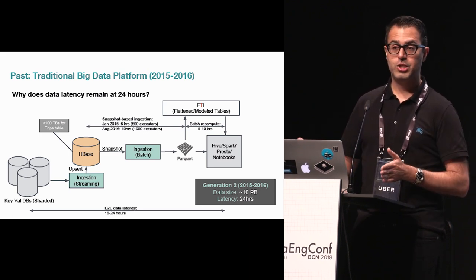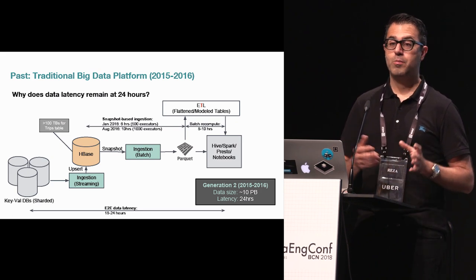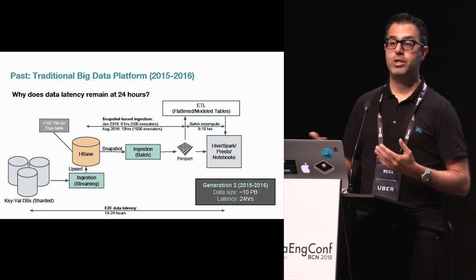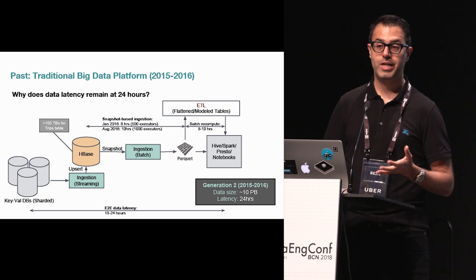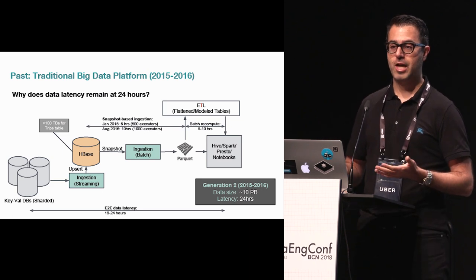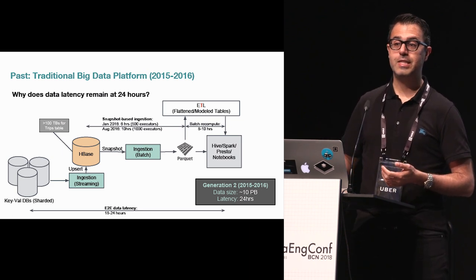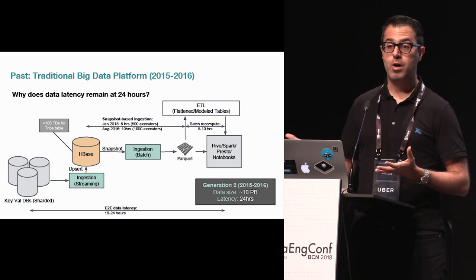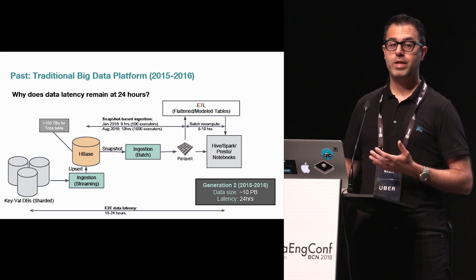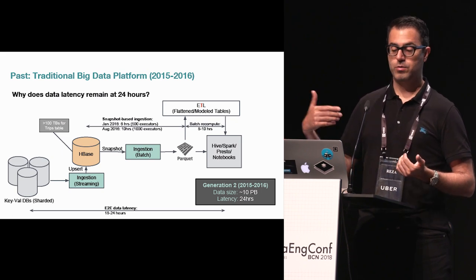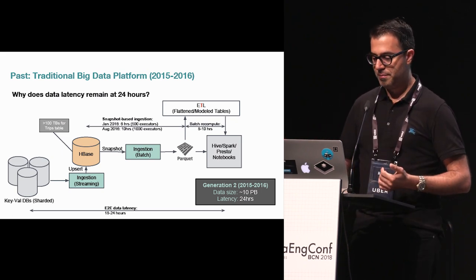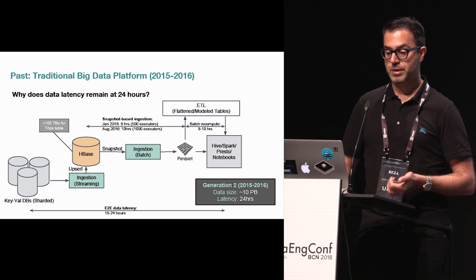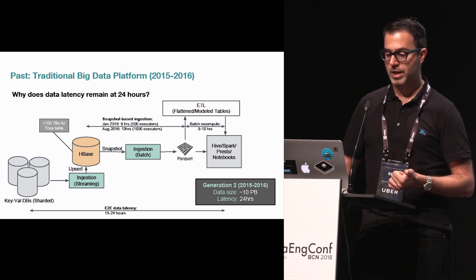When we started in January 2016, snapshot creation and Parquet conversion was taking around six hours. A few months later, the job was running 10 hours with double the resources — it was not scalable. We couldn't ingest more than once or twice per day, and then modeling had to happen on top of that, requiring another snapshot pass. The whole thing resulted in more than 24 hours data latency. Uber's use case is very real-time — cities need to make decisions in minutes or hours, not wait 24 hours for new data.